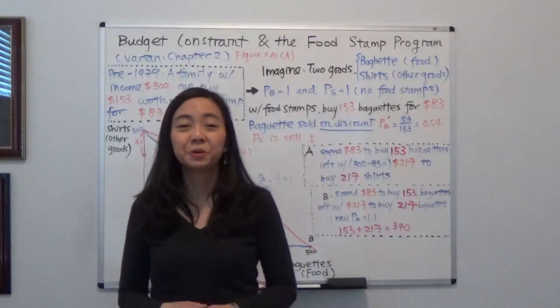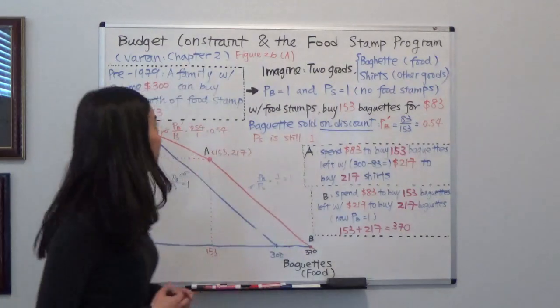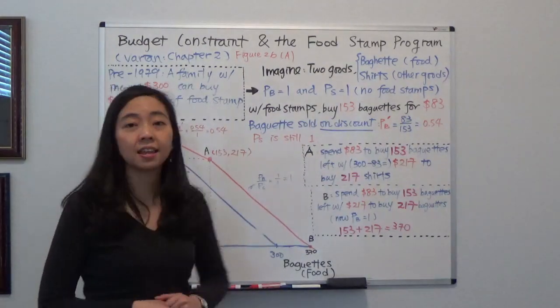Hello everyone, my name is Ahir Schwanz. I'm Wu Zhao Lin Wanru. Today we're going to talk about the budget constraint and the food stamp program.